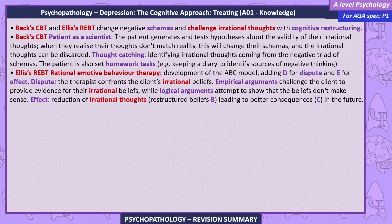Treating. Beck's CBT and Ellis's REBT change negative schemas and challenge irrational thoughts with cognitive restructuring. Beck's CBT — the patient as scientist: the patient generates and tests hypotheses about the validity of their irrational thoughts; when they realize their thoughts don't match reality, schemas can change and irrational thoughts discarded. Thought catching: identifying irrational thoughts from the negative triad. Patients are also set homework tasks such as keeping a diary to identify sources of negative thinking. Ellis's REBT — Rational Emotive Behaviour Therapy — adds D for Dispute and E for Effect to the ABC model. Dispute: the therapist confronts the client's irrational beliefs using empirical arguments challenging the client to provide evidence, and logical arguments showing beliefs don't make sense. Effect: the reduction of irrational thoughts, restructured beliefs, and better consequences in the future.